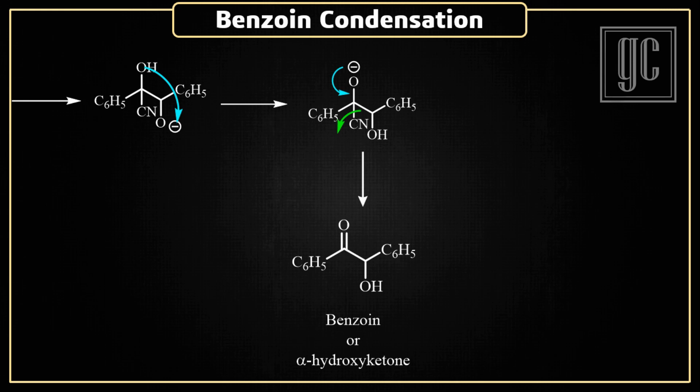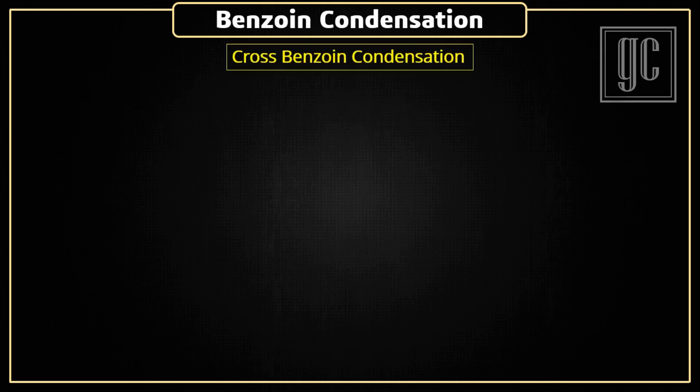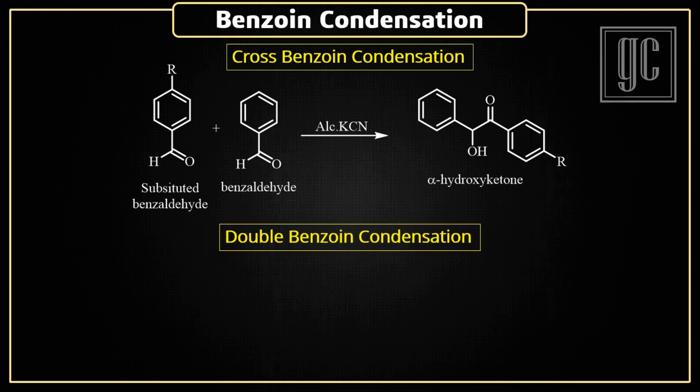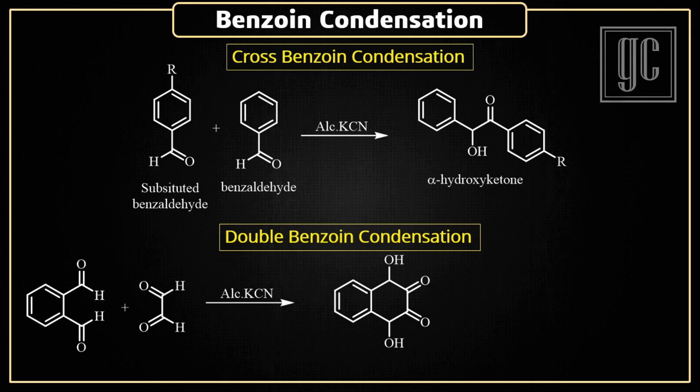The product is also known as benzoin. Next is cross benzoin condensation — when two different aldehydes are used as substrate, the benzoin condensation reaction is known as cross benzoin condensation. The position of the keto group depends on the cyanohydrin formation. Next is double benzoin condensation — when a molecule has multiple aldehyde groups, an intermolecular reaction takes place and a cyclic product forms as the final product.